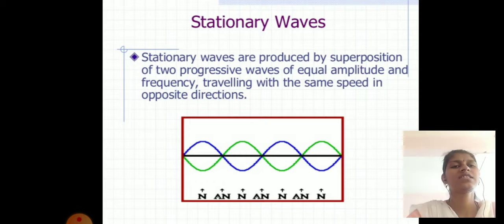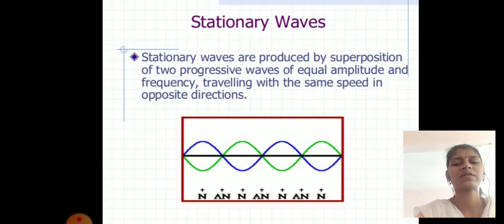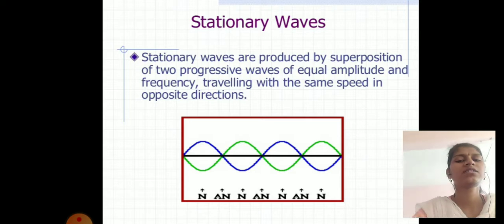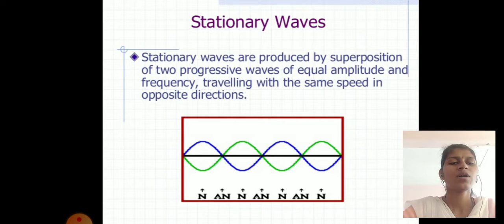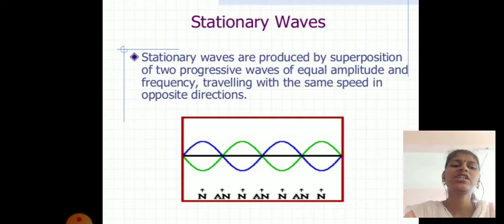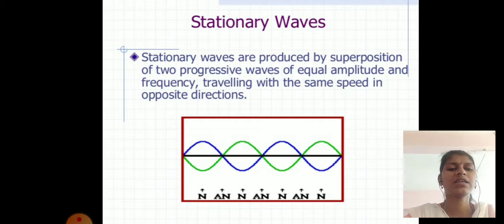Stationary waves are also called standing waves. The combination of two waves moving in opposite directions, each having the same amplitude and frequency, is called stationary waves.